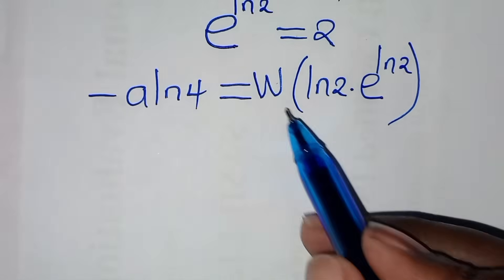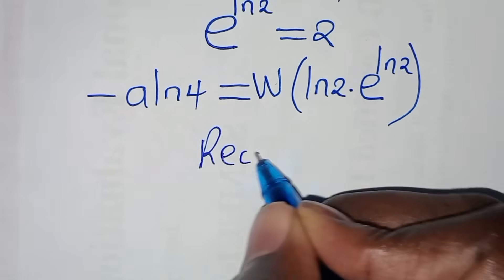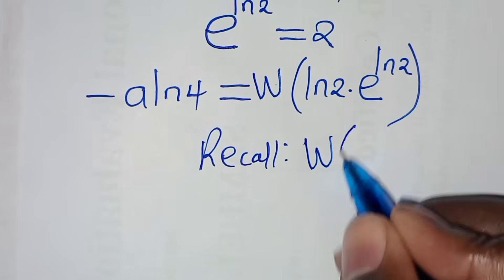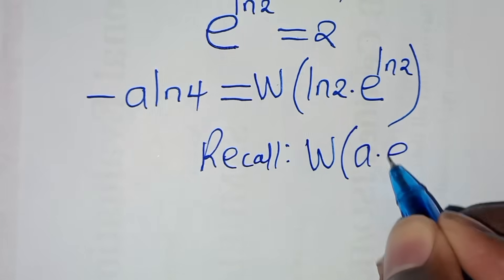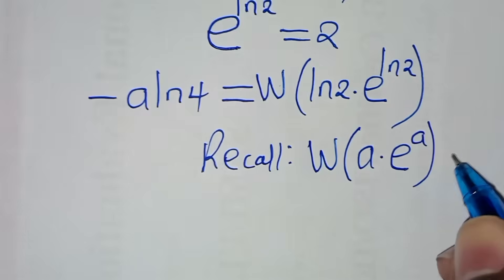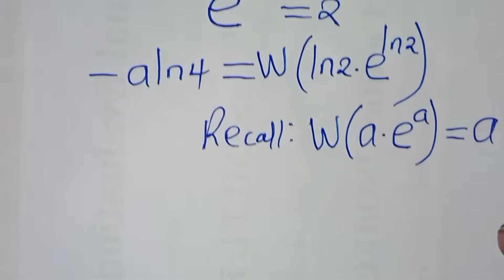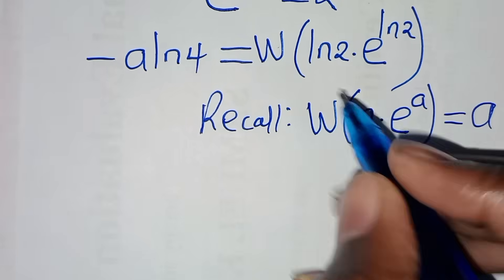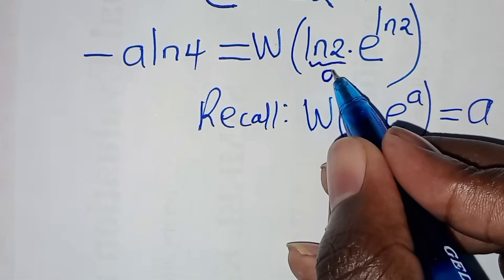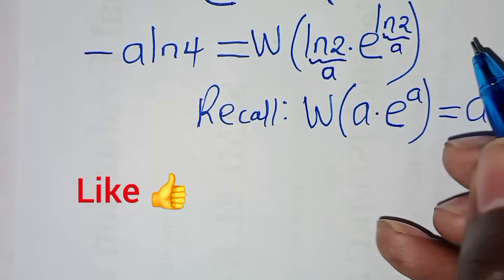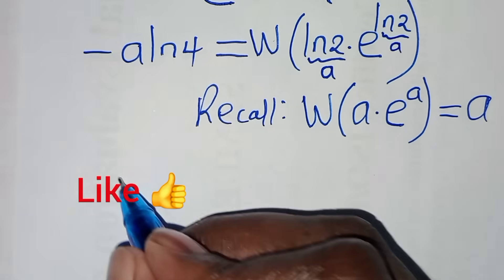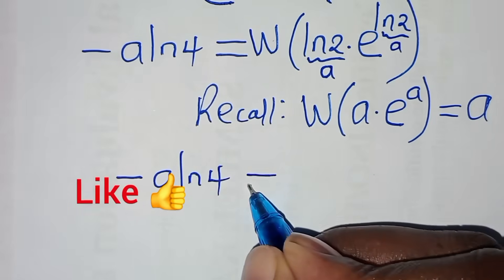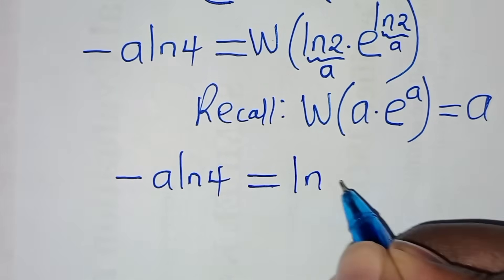Recalling the Lambert W property that W of a times e to the power of a equals a, we apply this to the right-hand side. Both the W function argument and the exponent match, so the right side simplifies. We get: minus a times ln 4 equals ln 2.